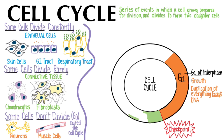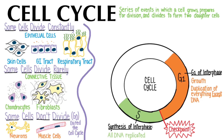Cells that pass the checkpoint now enter the S phase, which stands for synthesis of interphase. Now is when all of the DNA of the cell is replicated. For humans, this will be 46 linear strands of DNA that are duplicated. Another checkpoint ensures that cells that made too many mistakes during synthesis do not get to proceed to divide. Amazingly, our cells have multiple editing enzymes that can correct many kinds of errors.